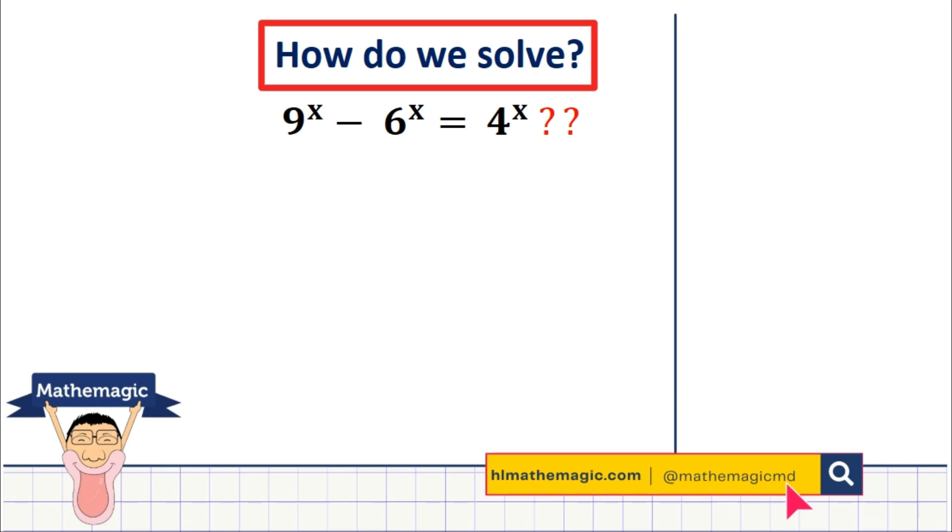Welcome to the MathMagic channel. How can we solve 9 to the power x minus 6 to the power x equal 4 to the power x? This is a really interesting question with lots of very smart steps for math olympiads. Watch the video and find out.